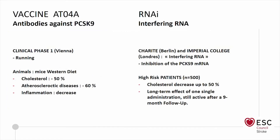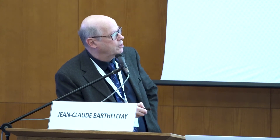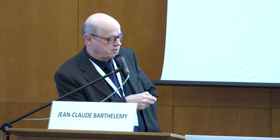The future may lie in the treatment of PCSK9. A vaccine has been tried — cholesterol is reduced by 50%, but there are some drawbacks such as pain at the injection site. Instead, interfering RNA, which interferes with the RNA of PCSK9, can be given to high-risk patients with a very significant decrease and a very long-term effect. After a nine-month follow-up, the decrease is still 50% in this population.